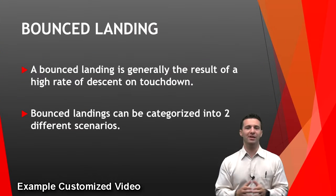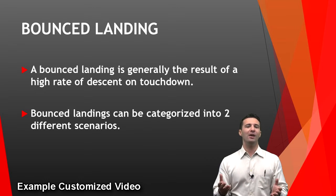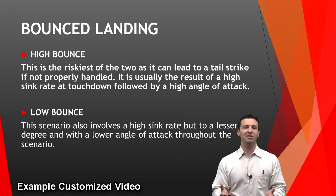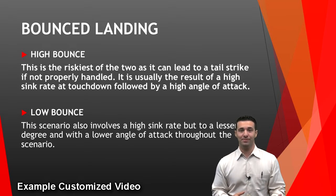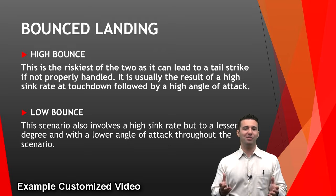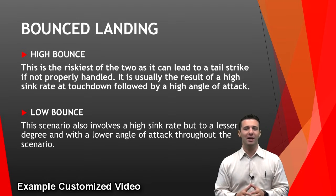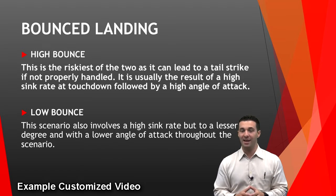A bounced landing is generally the result of a high rate of descent on touchdown, and it can be categorized into one of two different scenarios. Those scenarios are either a high bounce or a low bounce. The high bounce is really the riskiest of the two, as it can lead to a tail strike if not properly handled, and it's usually the result of a high sink rate at touchdown followed by a high angle of attack.